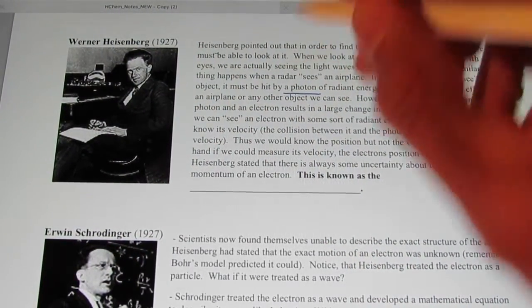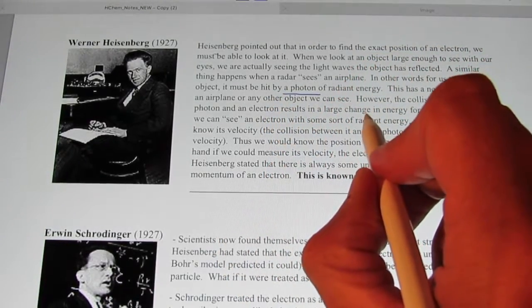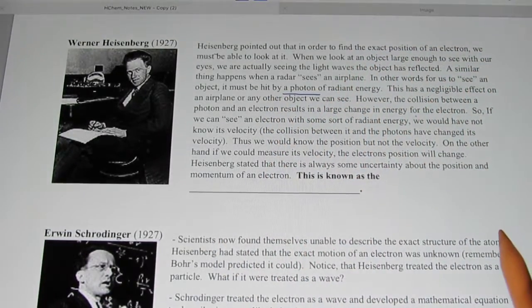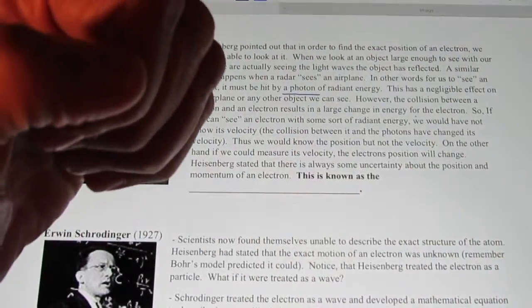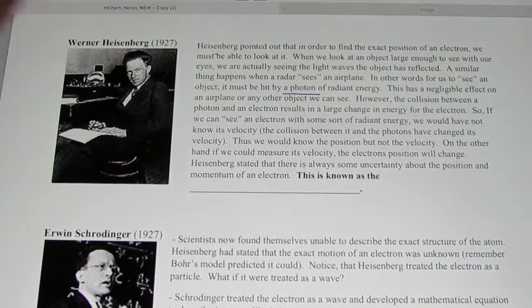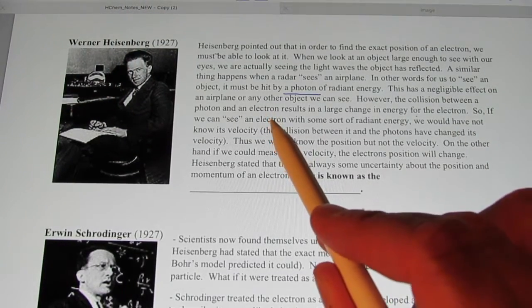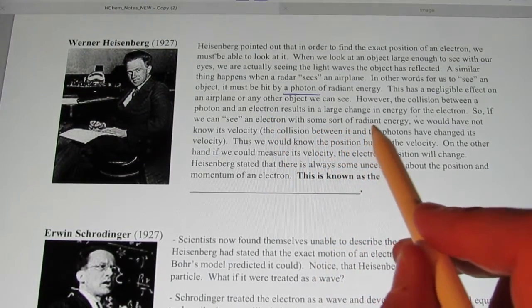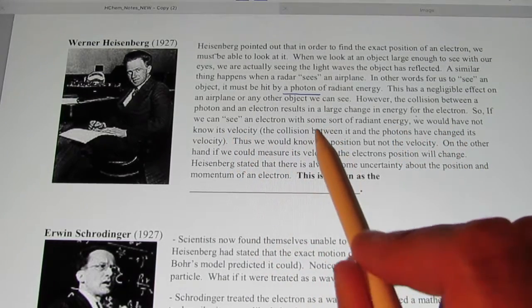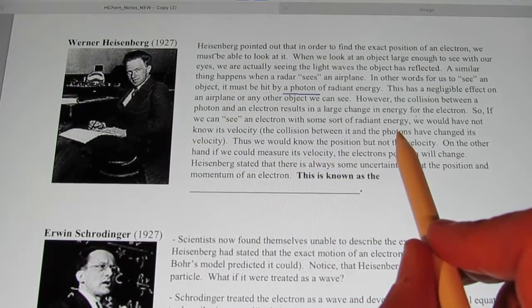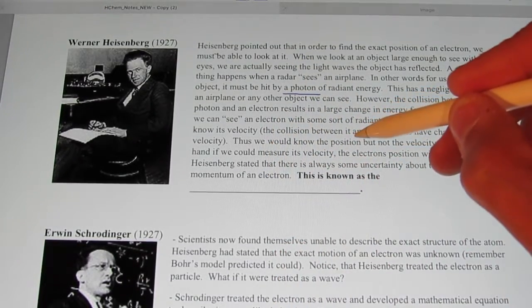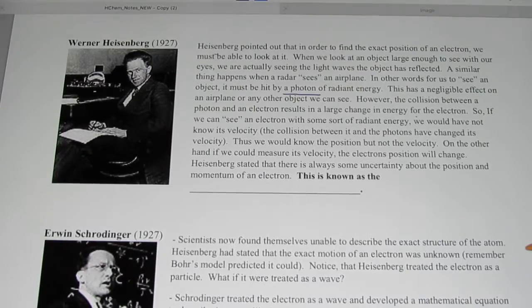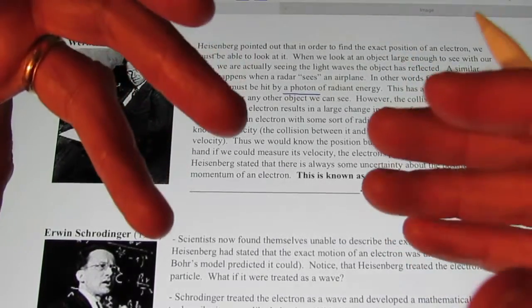However, the collision between a photon and an electron results in a large change in energy for the electron. So when a photon of light hits an electron, boom, that actually changes its position. So if we can see an electron with some sort of radiant energy, we would not know its velocity because the collision between it and the photons has changed its velocity. Thus we might know the position, but not the velocity of an electron. So we can't predict where it will be later.